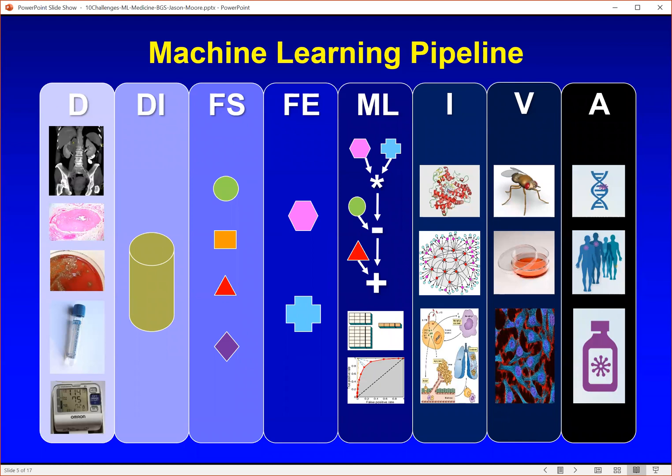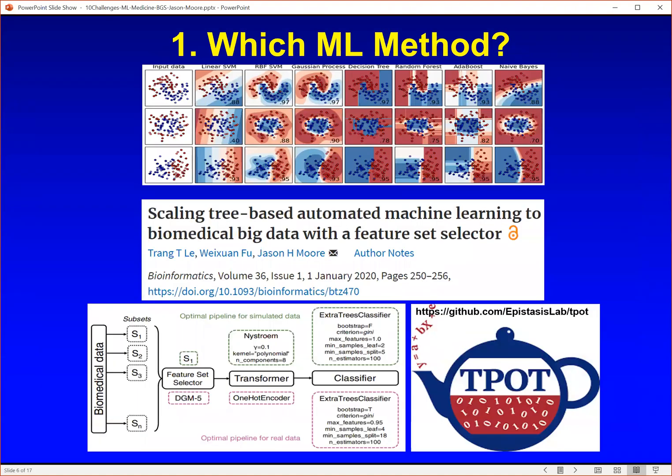This is how I think about the machine learning pipeline, going from data on the left through data integration, feature selection, feature engineering, machine learning, interpretation, validation, and ultimately clinical application. What I would like to do is quickly highlight 10 challenges of working with machine learning in the healthcare space and how we've addressed some of these challenges.